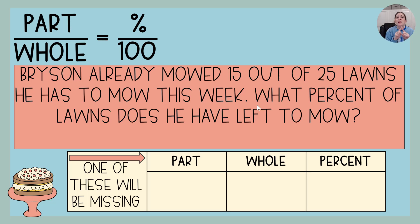But the question says, how many lawns does he have left to mow? So he needed to mow 25. He has mowed 15, so that means he only has 10 left to mow. Pay attention to what that's asking you, it says how many are left.